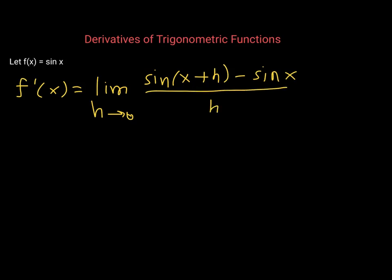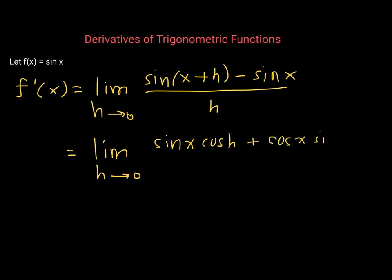Now what we want to do is use our sum identity for sine to expand this. So f prime of x is equal to the limit as h approaches zero of sine of x times cosine of h plus cosine of x times sine of h minus sine of x, all over h.